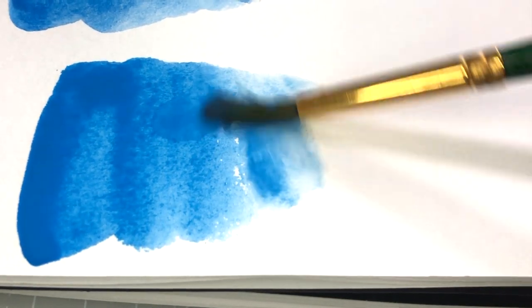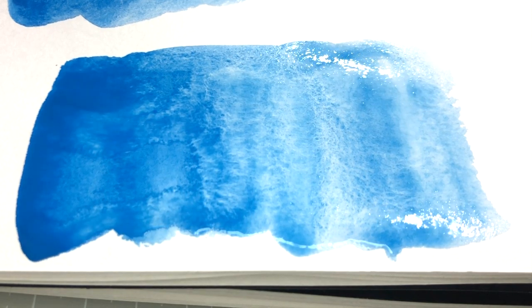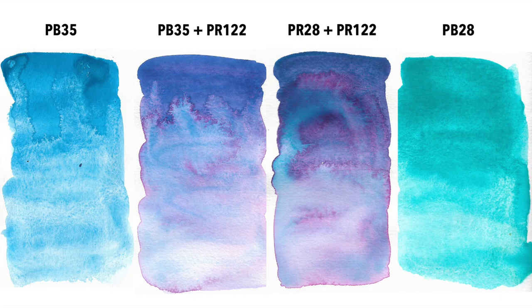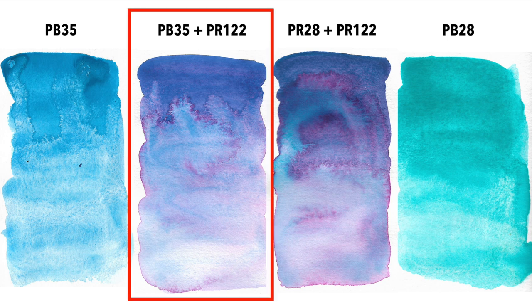Then I have here Cobalt Cerulean Blue PB35. This one is Series G, so it is expensive, but I'm not here to talk about price today. I'm here to show you that Mijello's watercolors granulate well if you choose the right colors. I mixed this with Quinacridone Magenta, and I just love the color separation here.